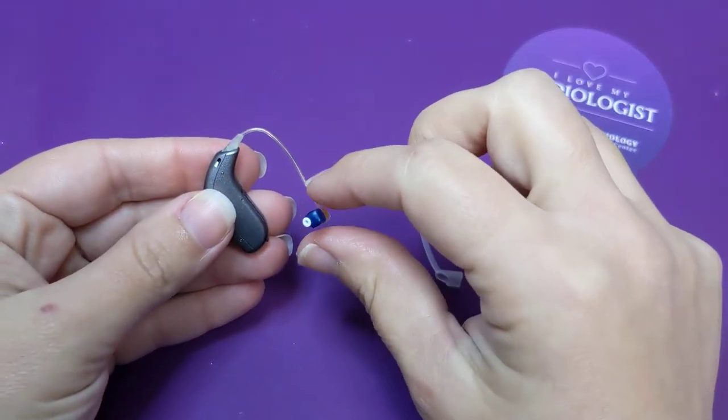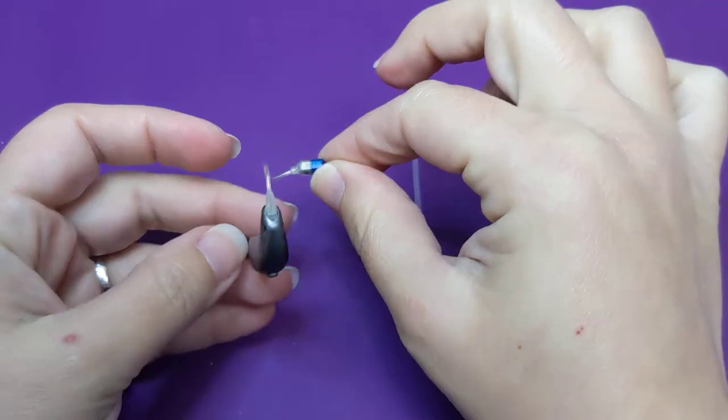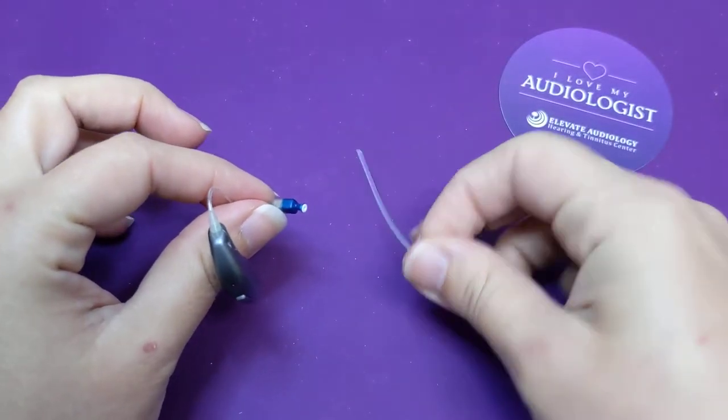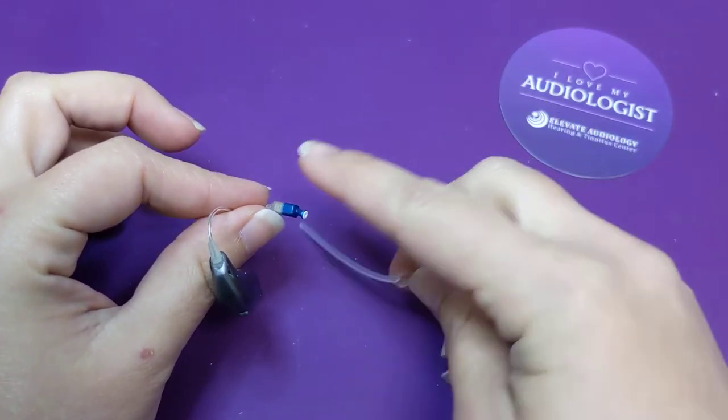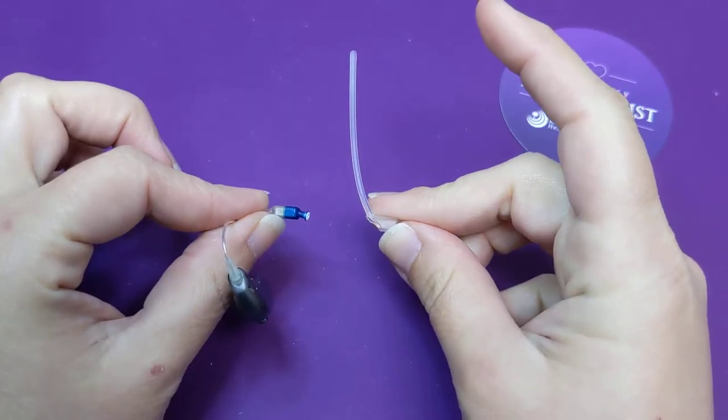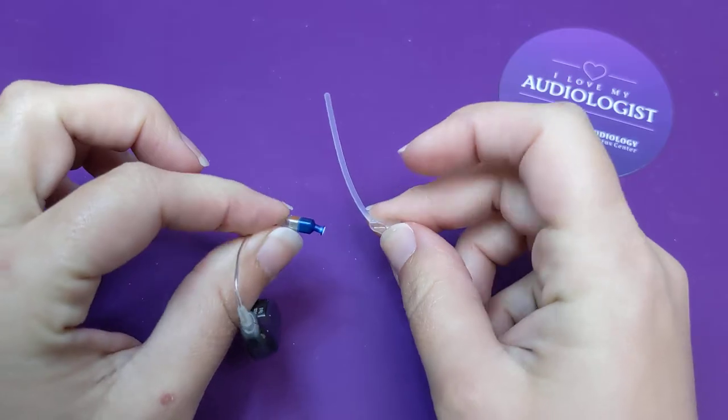So this would be the left side, it's blue as you can see. And so there are different size anchors for different size speakers. So this is the appropriate size anchor for an 85 decibel speaker.